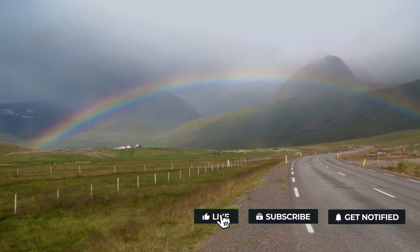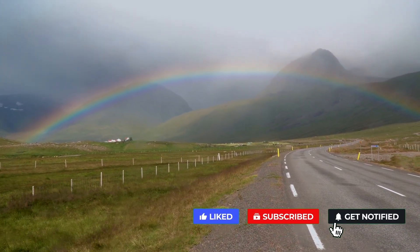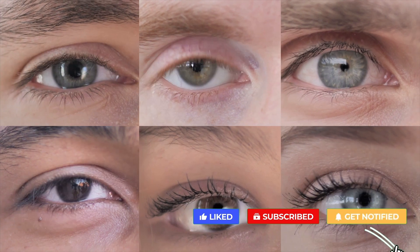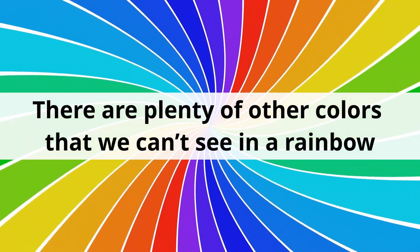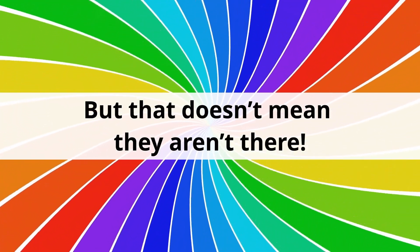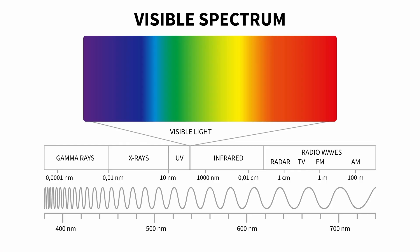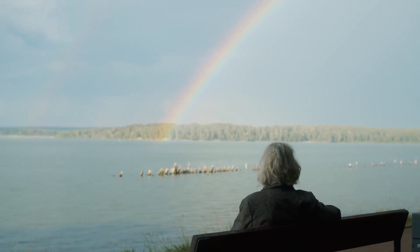What you might not know is that everyone sees slightly different shades of color when looking at a rainbow. Different sets of eyes means different responses to colors. There are plenty of other colors that we can't see in a rainbow, but that doesn't mean that they aren't there — these other colors lie in the ultraviolet and infrared regions, which our eyes cannot naturally detect. Fortunately, what we can see is still pretty beautiful.